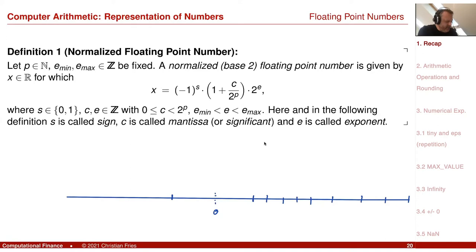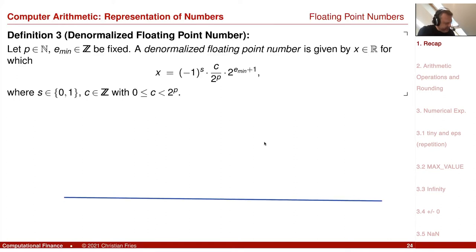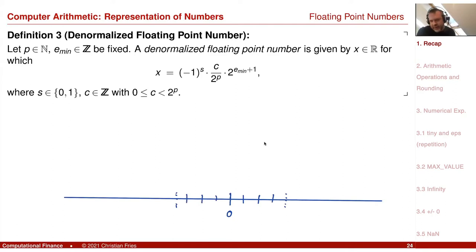Another definition was the denormalized numbers. The denormalized numbers were the missing gap around zero. So we had here zero, and now zero belongs to the set. There was an equidistribution within this set. And we observed that there were actually two versions of zero: plus zero and minus zero, because we have here this encoding of the sign multiplied with zero.